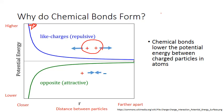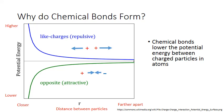That potential energy decreases the farther apart those particles get, and the weaker that repulsive force becomes. The green line at the bottom represents the potential energy for two oppositely charged particles, like a proton and an electron.